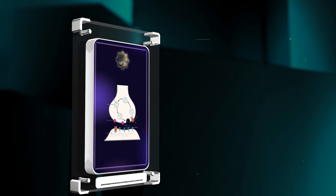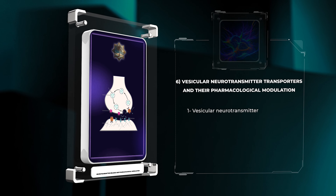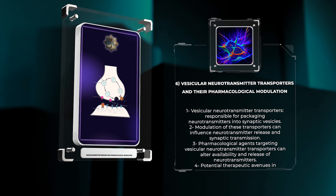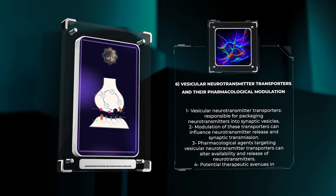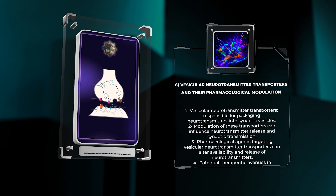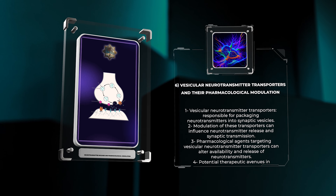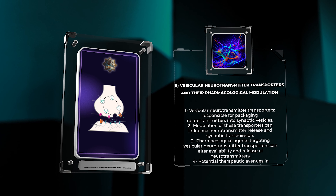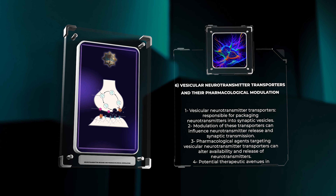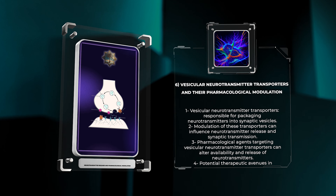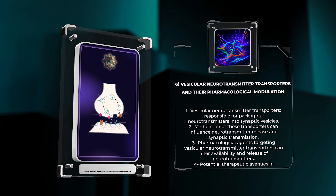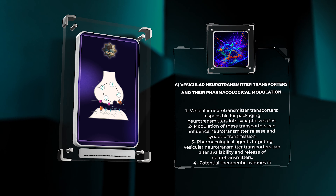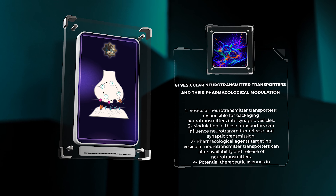Vesicular neurotransmitter transporters are responsible for packaging neurotransmitters into synaptic vesicles, ensuring their efficient storage and release. Modulation of these transporters can influence the release of neurotransmitters and impact synaptic transmission. Pharmacological agents that target vesicular neurotransmitter transporters can alter the availability and release of neurotransmitters, offering potential therapeutic avenues in various neurological disorders.